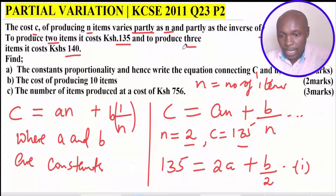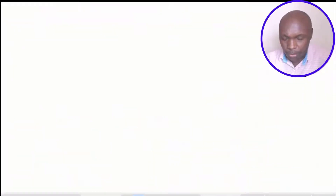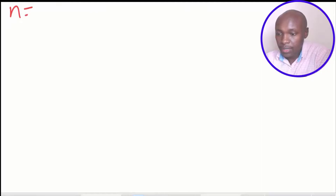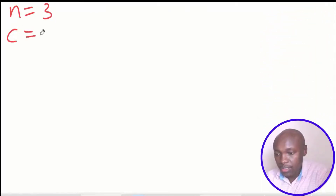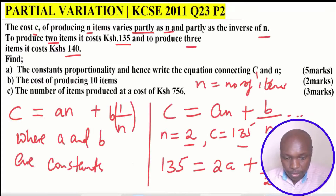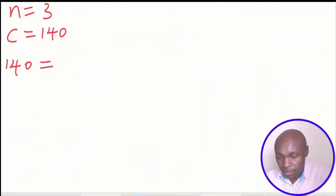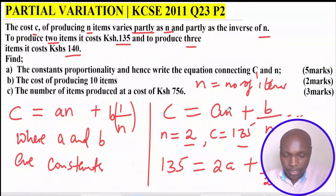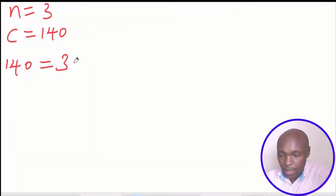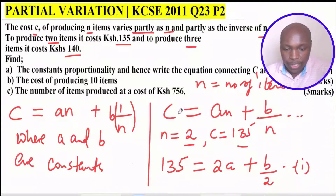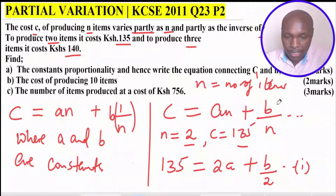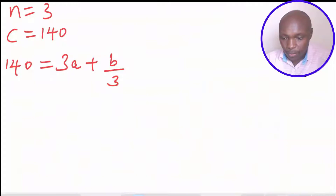For the second statement, the cost of producing three items is 140 shillings. Three items means N equals 3 and C equals 140. Substituting into C equals AN plus B over N, we get 140 equals 3A plus B over 3. Remember we are substituting in the equation C equals AN plus B over N, where N equals 3 and C equals 140. So that forms the second equation.